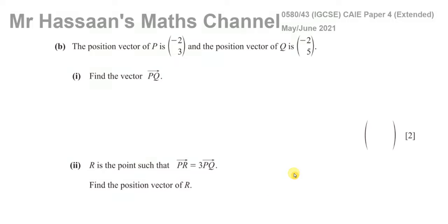Welcome back. This is Mr. Hassan's Maths Channel and I'm now answering question number 4, parts B and C from the May-June 2021 Paper 4, Variant 3 from the IGCSE Cambridge exam. This question is about vectors.